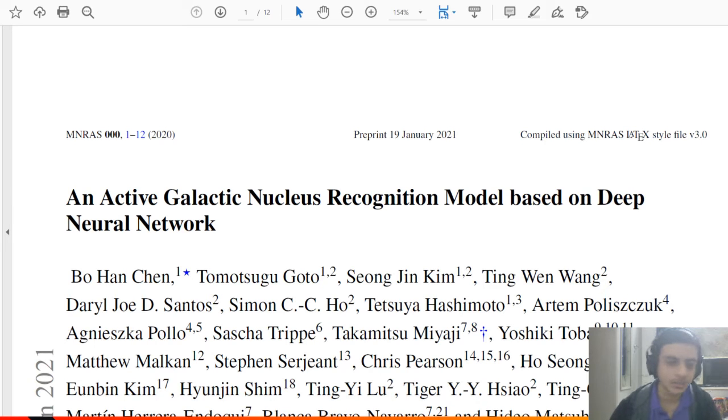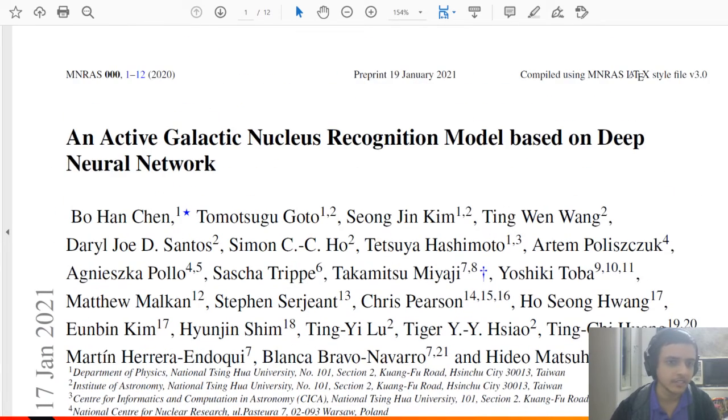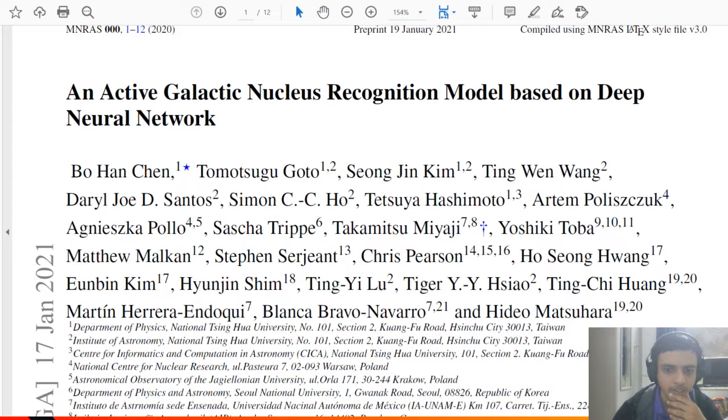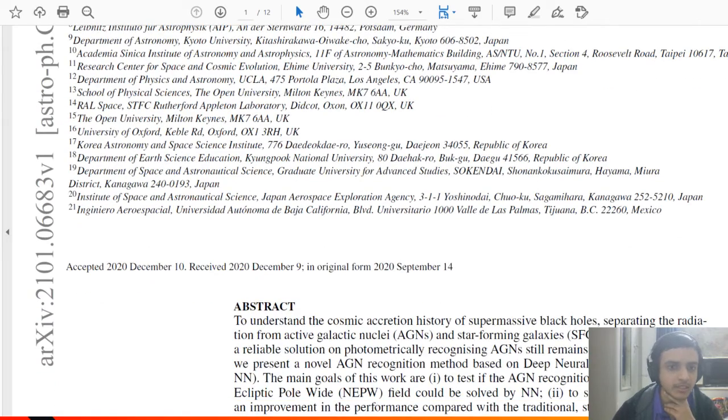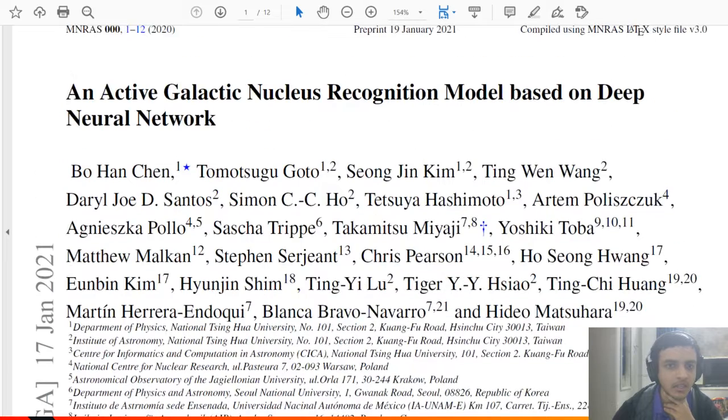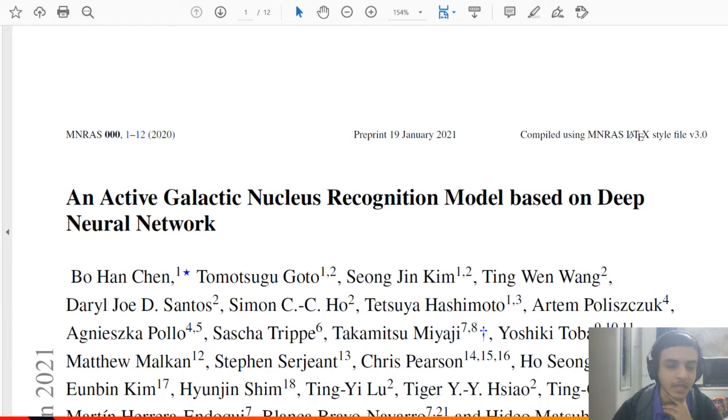Welcome everyone to another episode of Abirishi. Today we'll be looking at a very interesting paper published a few days back on 17th January by a group of scientists all around the world, some from Taiwan, Poland, Korea, the United States, the United Kingdom, Mexico, and Japan. The topic is about Active Galactic Nucleus Recognition Model.